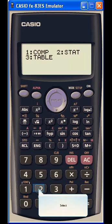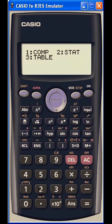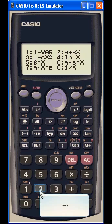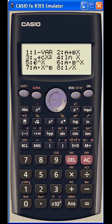We then select 2 marked STAT for statistics. You are then presented with a number of statistical modes. We will select mode number 2 which shows the formula for the line A plus BX.